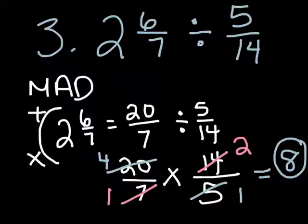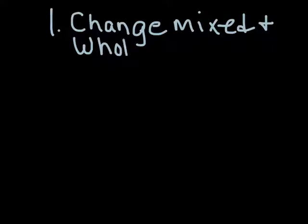I hope that helps, but I'm just going to go ahead and show you on the next slide. I'm just going to add a slide real quick and write down the steps for you, just in case you forgot. The first step, change mixed numbers, mixed and whole numbers to improper.